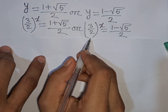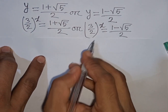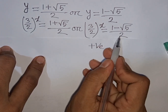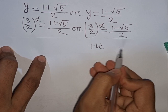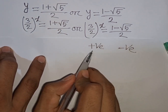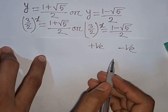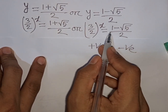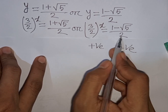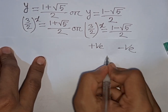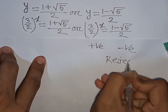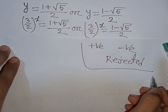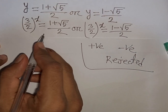(3 over 2) to the power of any number is always positive, and is always greater than 0. But (1 minus square root of 5) divided by 2 is negative, so positive cannot equal negative. Therefore this second case is rejected.